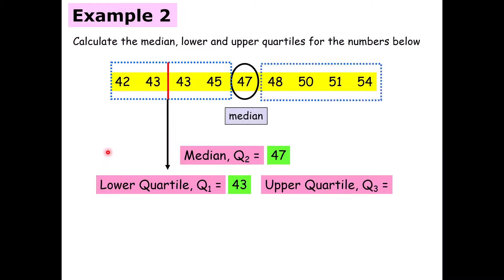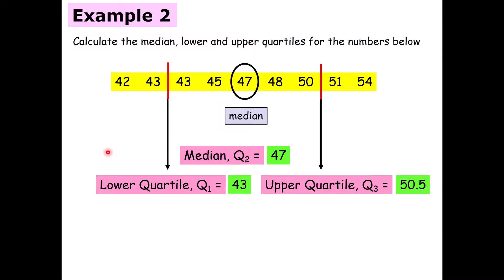For the upper quartile, the middle falls between 50 and 51. Directly in the middle of those two numbers is 50.5. The easiest way to find the middle number between two values is to add them both together and divide by two. So 50 plus 51 is 101, divided by 2 gives us 50.5. If you're ever unsure of the middle number, add them together and divide by two.